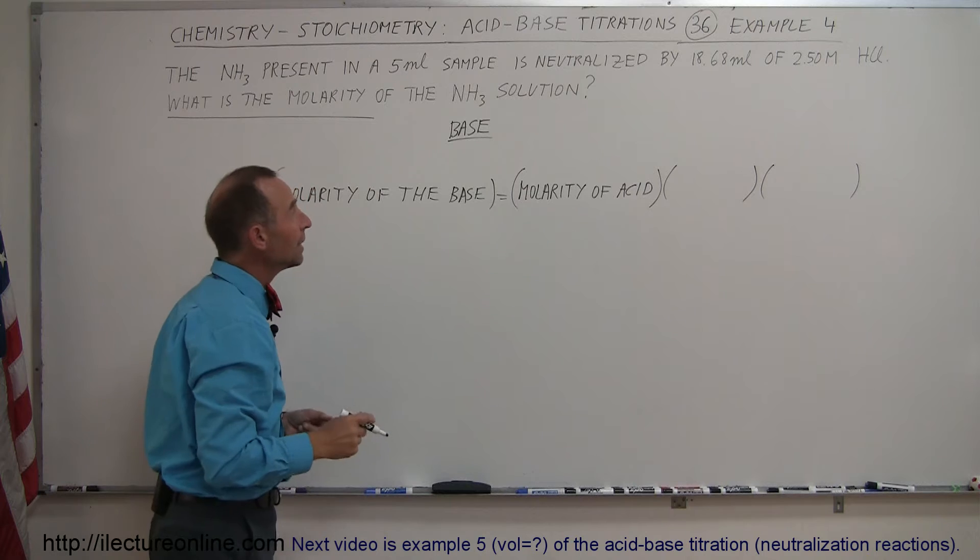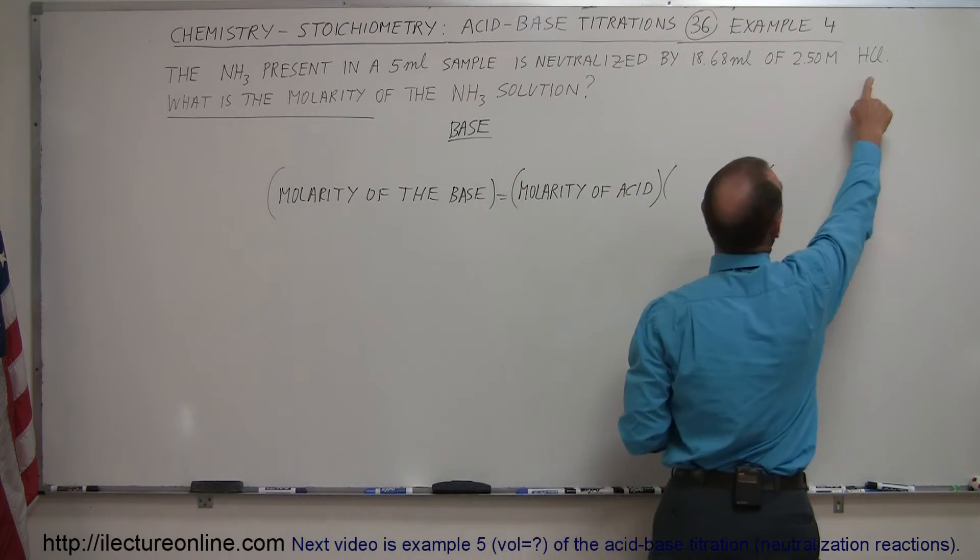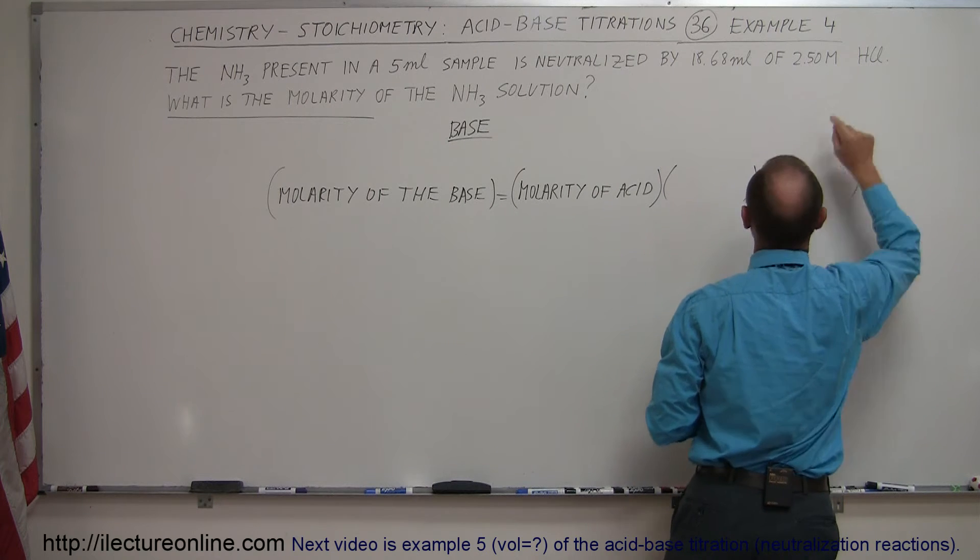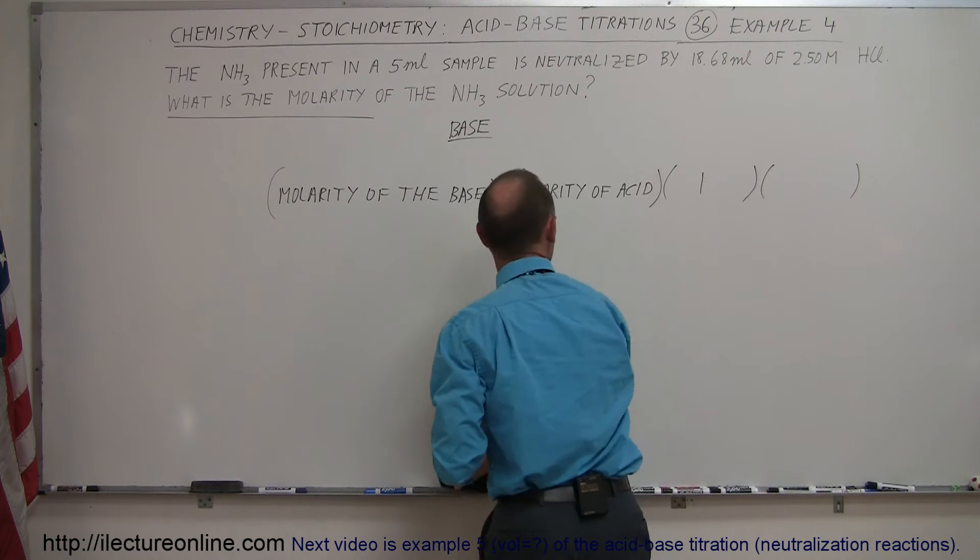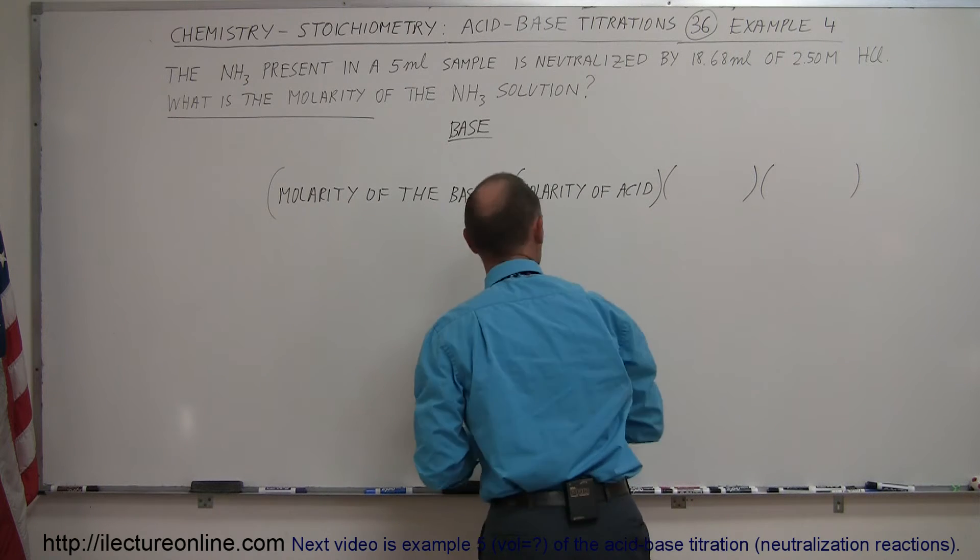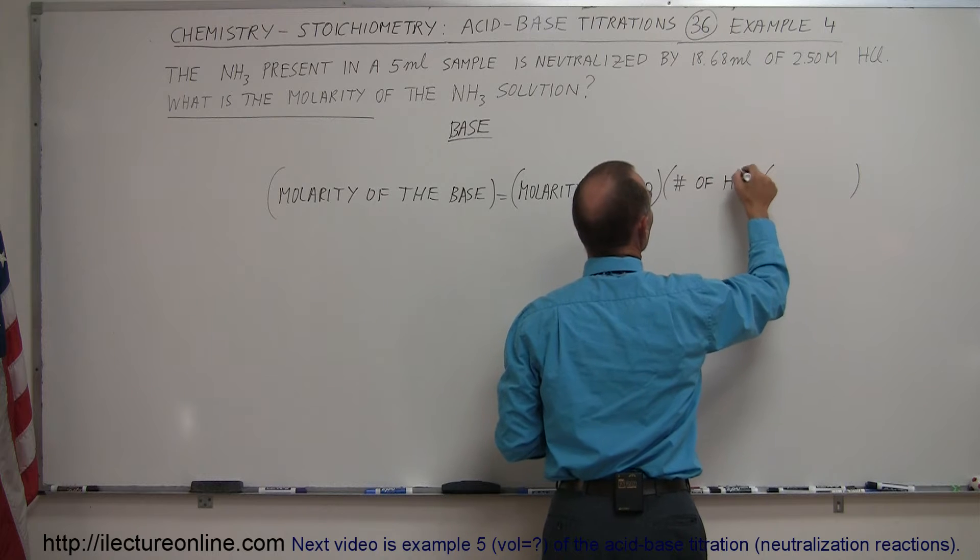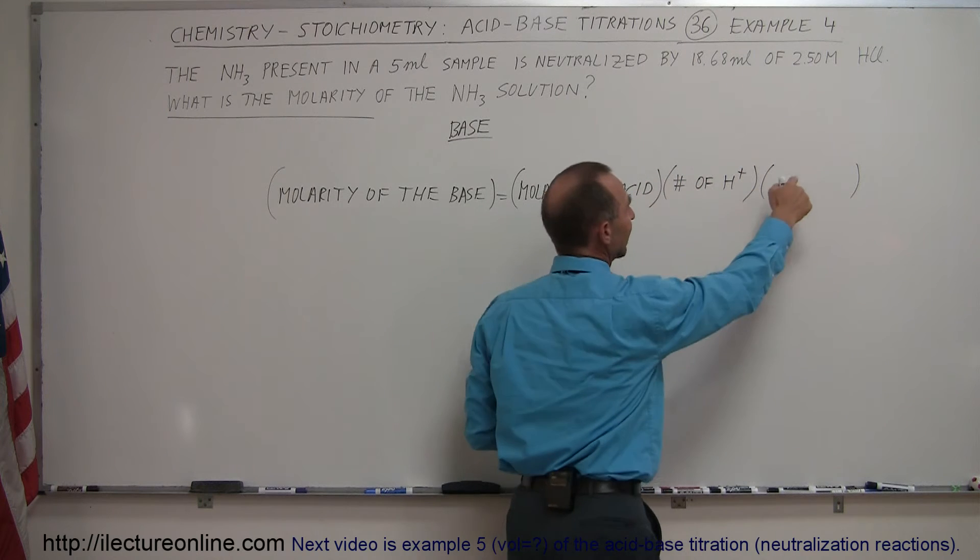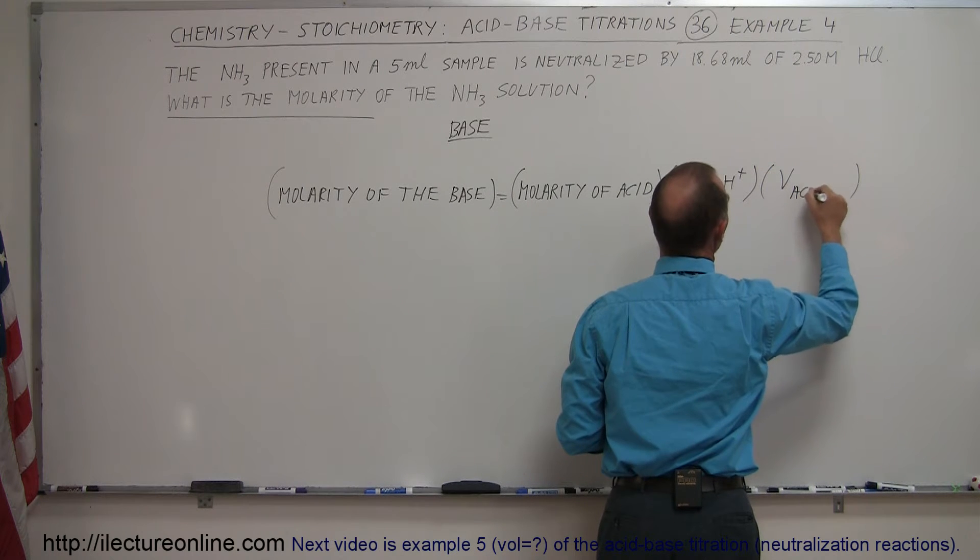One is how many ions of hydrogen does it produce per molecule of the acid, and in this case we can see there's only one hydrogen per molecule, so that means one. And here, let me just write it down in general before we put down the numbers. So we're looking for the number of hydrogen ions produced per molecule and then here we put on the volume of the acid we used, the volume of the acid.